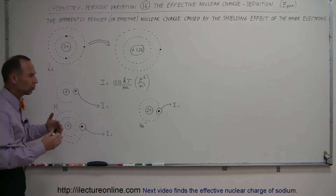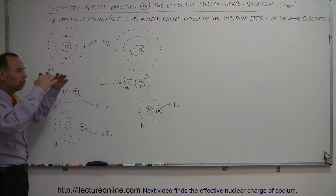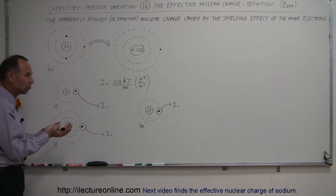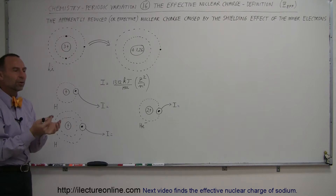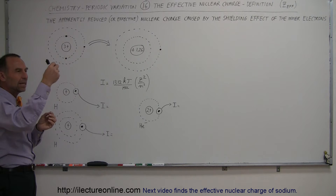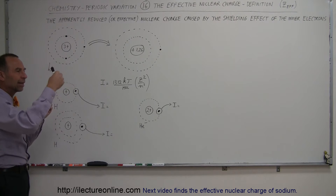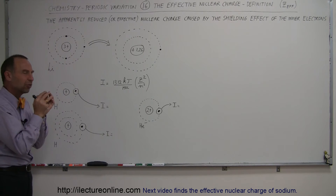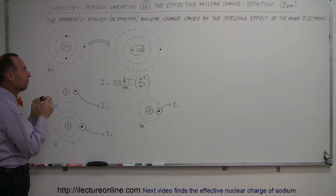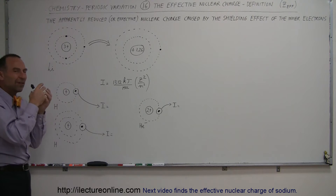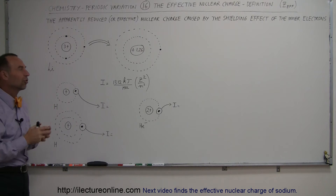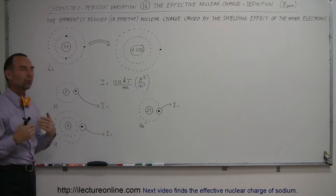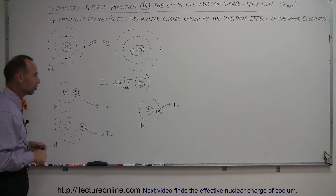You can imagine that when you have much bigger atoms with many electrons in inner orbits, the outer electron experiences a very different force of attraction due to the effective charge at the center, rather than the real charge at the center. That's what we mean by effective charge.